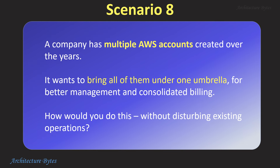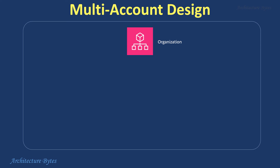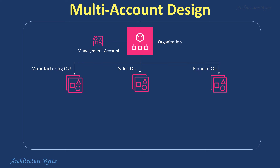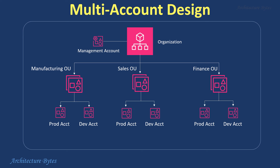A company has multiple AWS accounts created over the years and wants to bring all of them under one umbrella for better management and consolidated billing. We will use the AWS Organizations service to set up and manage multiple accounts. The primary account used to create the organization becomes the management account, under which you create organizational units or OUs — a convenient way to group accounts. Under an OU you can add other accounts, new or existing, by inviting them to join the organization. Once ready, you can do consolidated billing for all accounts at the organization level. Use service control policies at the organization or OU level to control what services are available to accounts under it.